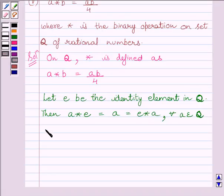Let us now find out A star E. It is equal to AE upon 4, which must be further equal to A, but this can't be possible.